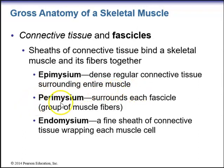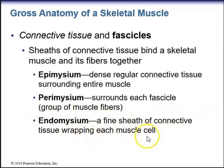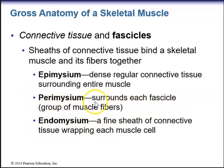The middle layer is the perimysium, which surrounds each fascicle — a group of muscle fibers. Surrounding each individual muscle fiber is the innermost layer, the endomysium, which is a fine sheath of connective tissue wrapping each muscle cell. So individual muscle fibers come together to form a fascicle. The fascicle is covered by perimysium, and a bunch of fascicles make up the entire muscle, surrounded by the epimysium as the outermost connective tissue layer.